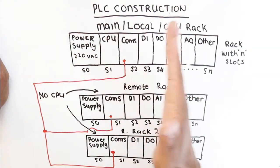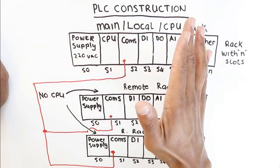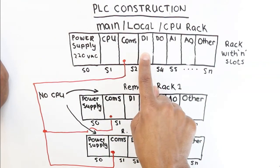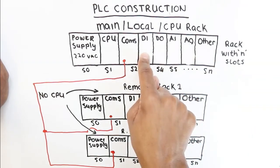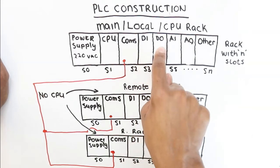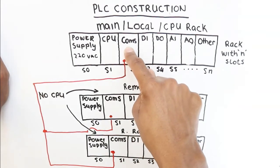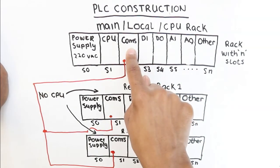Another thing to note in terms of the types of cards you'd have on a rack: you can have, for this rack maybe on the main rack, digital input cards right through. It does not necessarily mean that I need to have one digital input, one digital output, and so forth.